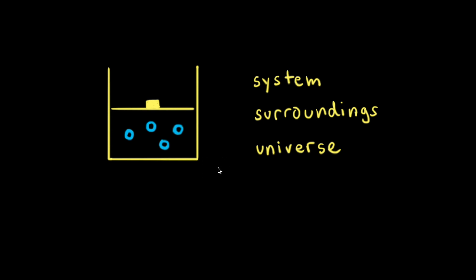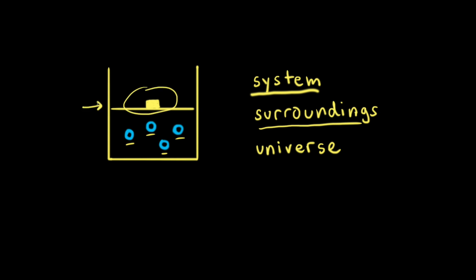Before we get into the terms endo and exothermic, we need to look at some other thermodynamics terms that are used. For example, system — the system refers to the part of the universe that we are studying. For our example, we're going to consider a monatomic gas; let's say we have some helium particles in a container, and the helium gas represents our system. The surroundings are everything else in the universe, so that would include the piston and the cylinder. The universe consists of both the system and the surroundings.